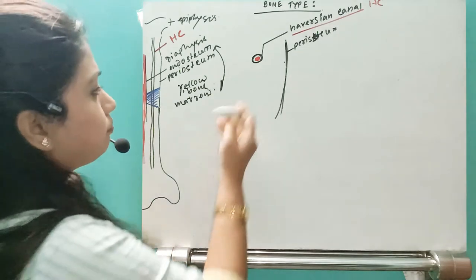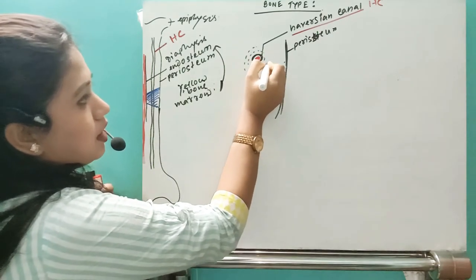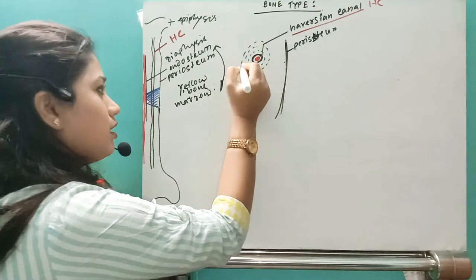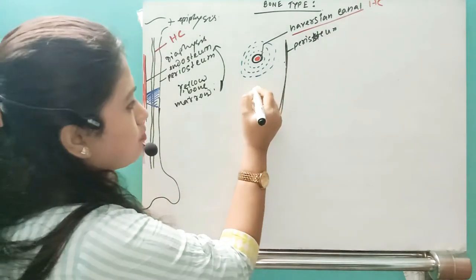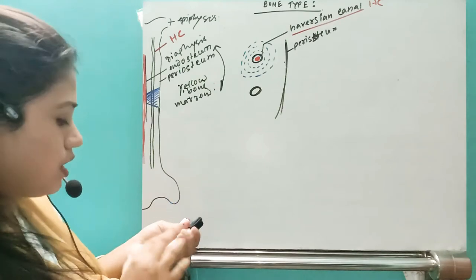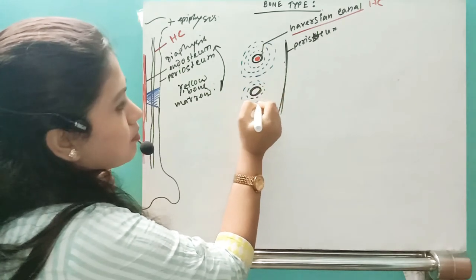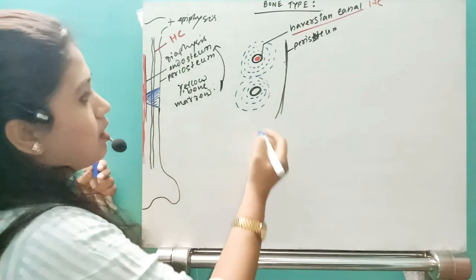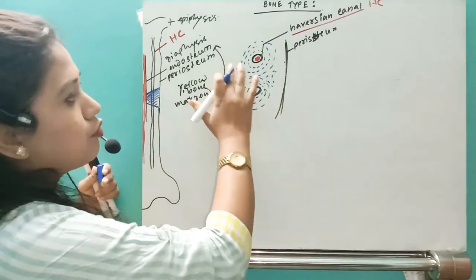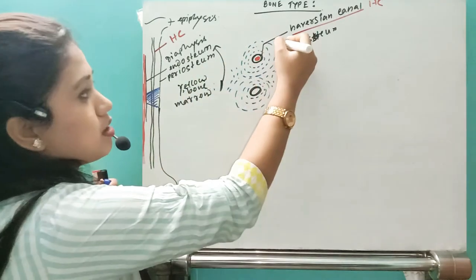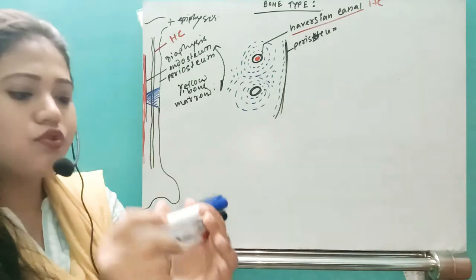Suppose this is one lamella — one layer — then around that we see another layer, and around that another layer. There can be another Haversian Canal nearby, and around that canal also we will see concentric rings of lamellae. There are varieties of lamellae: some will be around the Haversian Canal, some will be in between the concentric rings, and some will be around the periosteum.